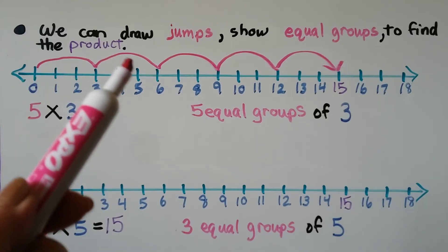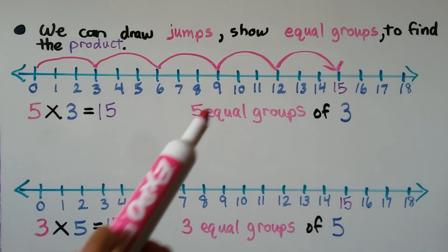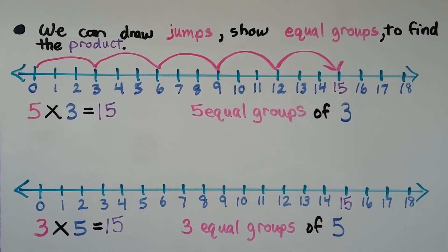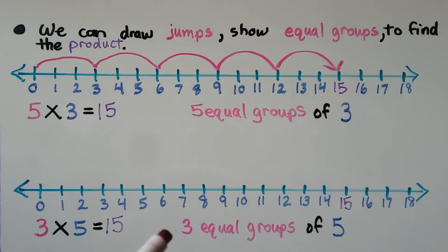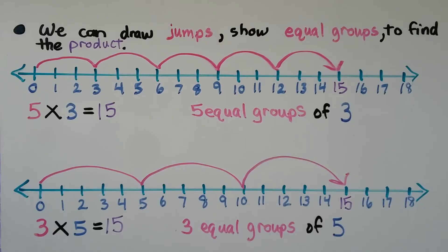We see it's equal to fifteen. We've got five jumps of three, so we're skip counting by threes. The next number line is three times five is equal to fifteen. We're going to need three equal groups of five — three jumps of five, one, two, three jumps. Three equal groups of five is equal to fifteen.